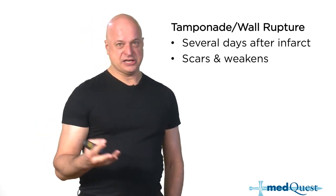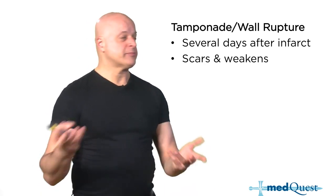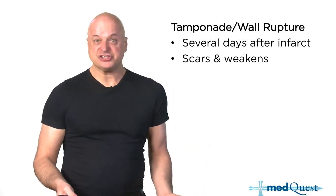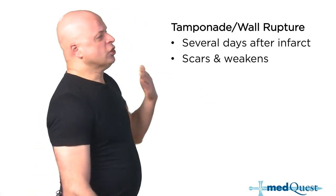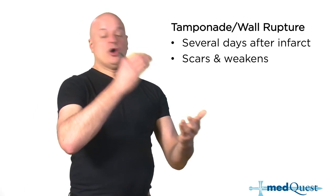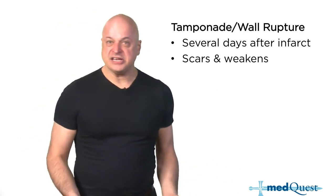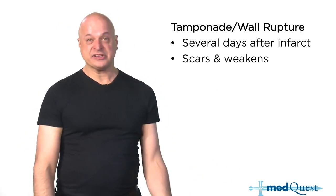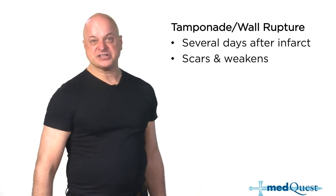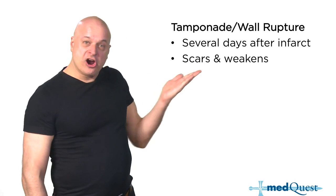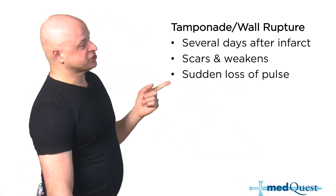70% of bypass surgeries are gone — the number of people getting bypass surgery is down by 70% in the last 30 years because of the rise of angioplasty and stents. These complications were signs of people who infarcted before dual antiplatelets and stenting. So the infarcted tissue would scar and weaken, and a week later it would pop — presenting as pulseless electrical activity.